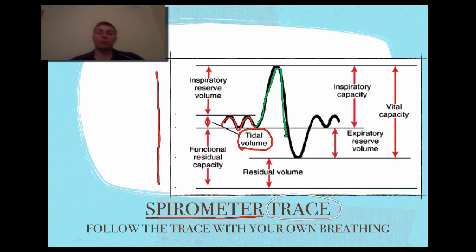As we come down, we get to the expiratory reserve volume. If you breathe out and try to breathe as much out as possible, you'll reach this trough here. That on your spirometer trace is the extent of your expiratory reserve volume. As you breathe back in, you come back up and your normal breathing will return — which is again your tidal volume.